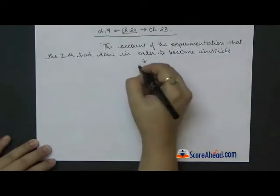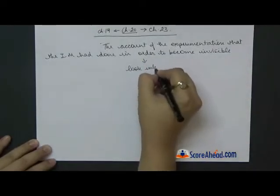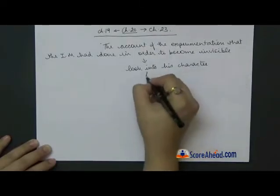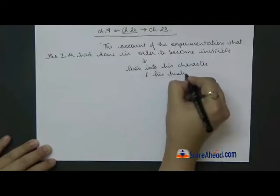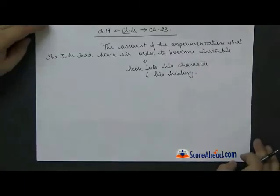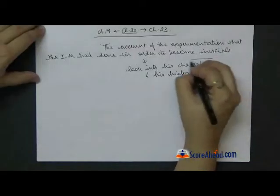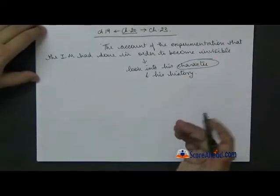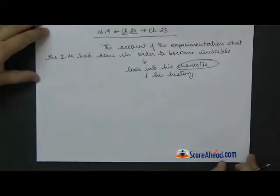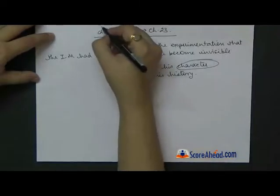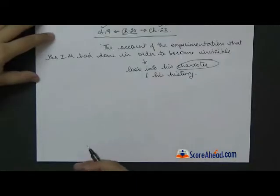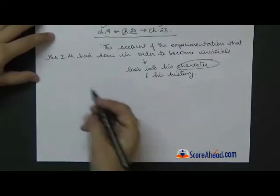It would also give us a look into his character and his history. What kind of a person was he, what did he go through, and things like that that you need to know just in order to know the character of a person, and of course the detail of all the experimentation that he did and how he became successful. So this starts from chapter number 19 and goes up to chapter number 23. This is like a background of the Invisible Man.